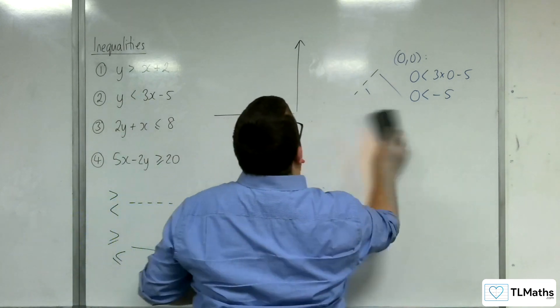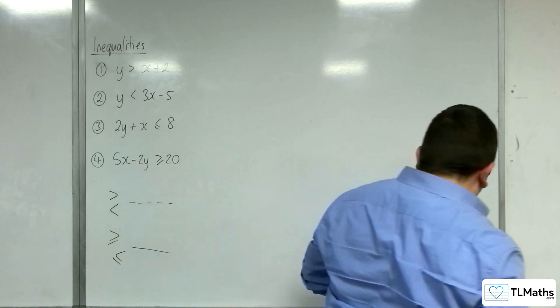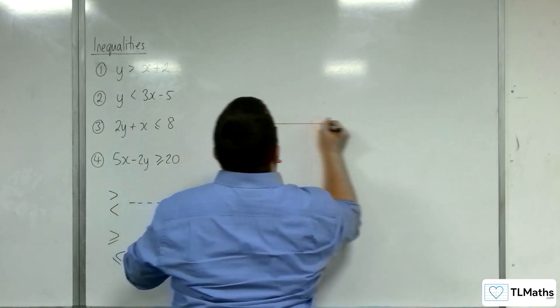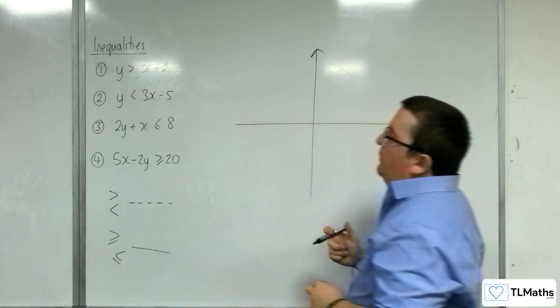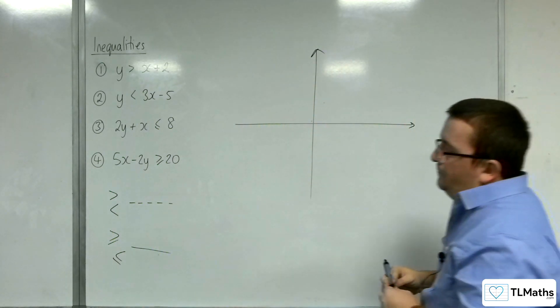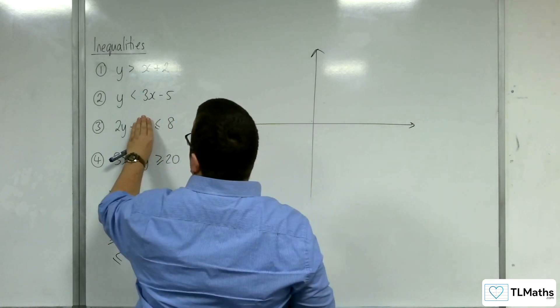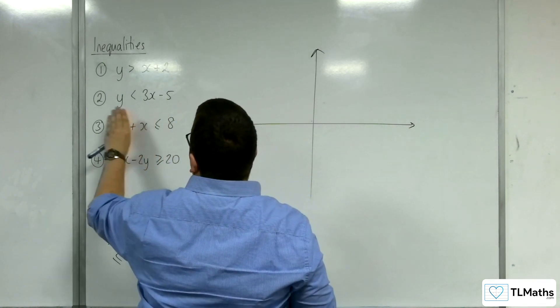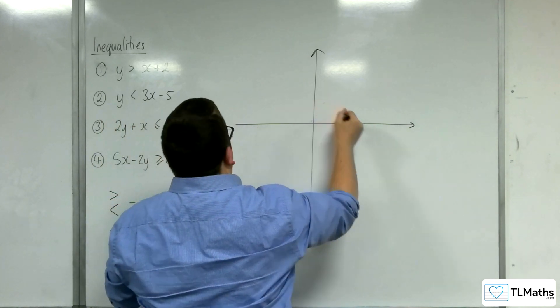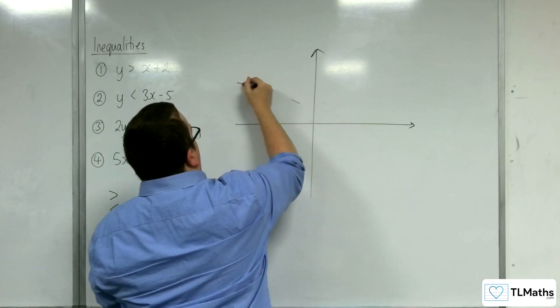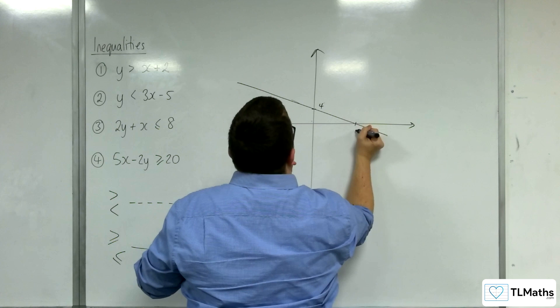Right. Let's take a look at example number 3. So, we've got 2Y plus X is less than or equal to 8. So, when X is 0, Y is going to be 4. And when Y is 0, X is going to be 8. So, we're going to have 4 and 8. And it's going to be a solid line. So, something like this. There's 4. There's 8.